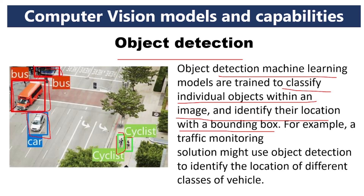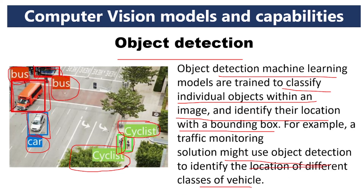For cycles, a bounding box is taken automatically. For buses, a bounding box identifies them — buses are given a red color, cars a blue color, and cycles a green color automatically. In a traffic monitoring solution, object detection is used to identify the location of different classes of vehicles. Cyclists are on the footpath, the car is on the road, a bus is on the zebra crossing, and another bus is at the bus stand. With object detection we can easily detect location.